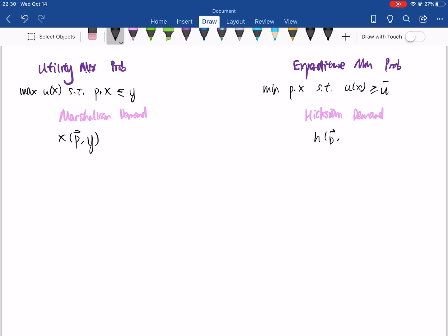while the Hicksian demand takes as an input a price vector as well as the utility level, and spits out the minimum expenditure you could spend that still gives you the minimum utility level. And these two demand functions are related by the Slutsky equation, which basically decomposes the effect,